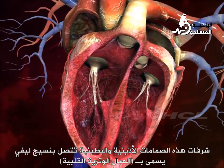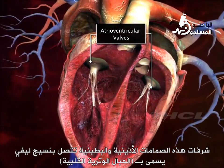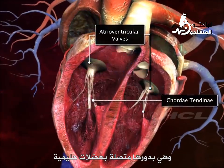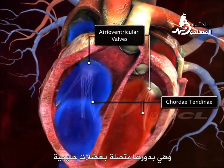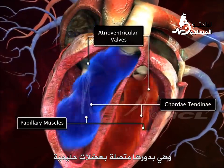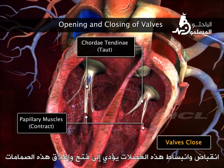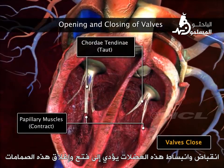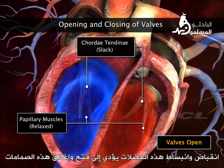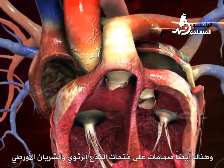The leaflets of these atrioventricular valves are connected to fibrous tissue called the chordae tendineae, which in turn are attached to papillary muscles. Contraction and relaxation of these muscles make the valves open and close.